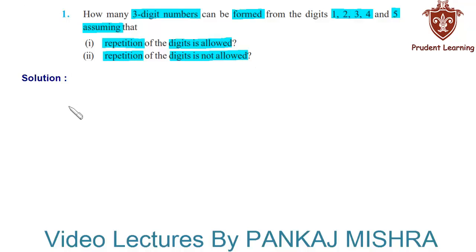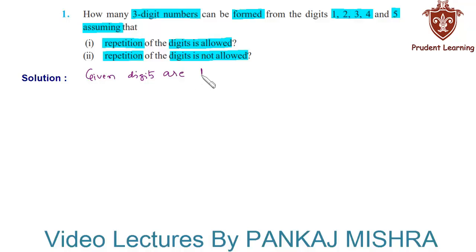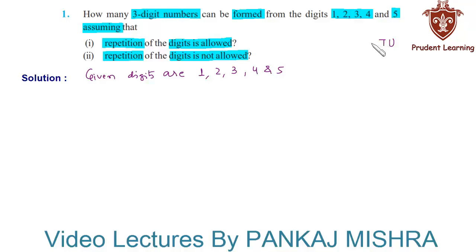Let us see the solution for each section one by one. The given digits are 1, 2, 3, 4 and 5. We know that in a three-digit number we have units place, tens place and hundreds place.